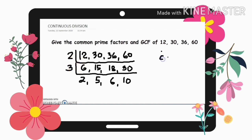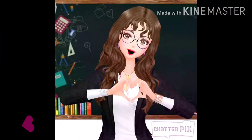So, the common factors of 12, 30, 36, and 60 is or are 2 and 3. So, the GCF now is multiply natin mga common factors. 2 times 3 is 6. So, the GCF is 6.